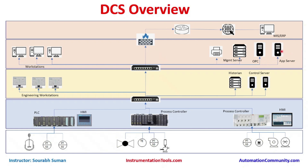Other types of application servers are also possible. In DCS, some data may also go to the cloud, to MIS, to SAP servers, or to other external systems. This is how a generic high-level architecture of a DCS looks.